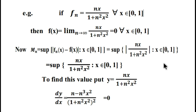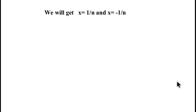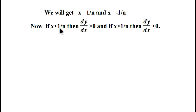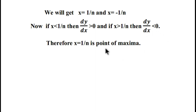To find the maximum value, we calculate dy/dx. The derivative is (n - n³x²) / (1 + n²x²)². To find stationary points, we set it equal to zero and get two values: x = 1/n and x = -1/n. If x < 1/n, the derivative is positive; if x > 1/n, the derivative is negative.